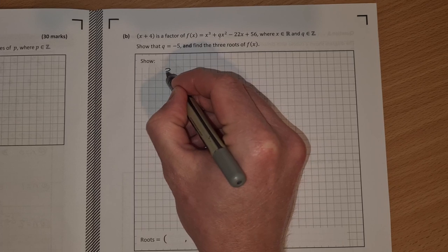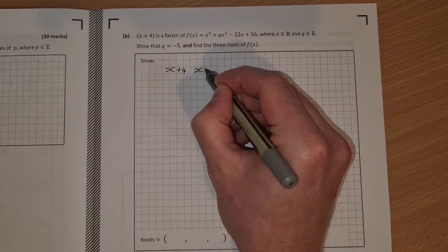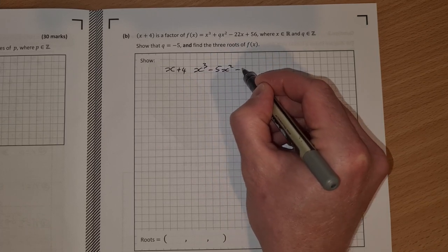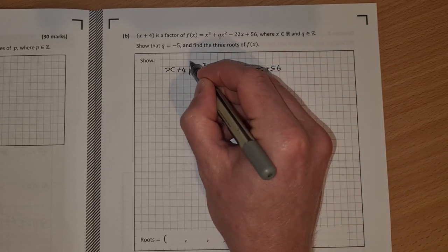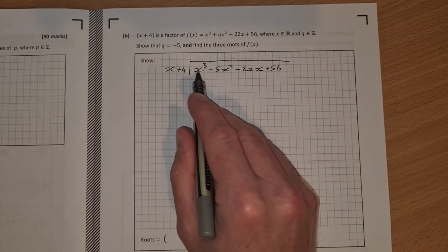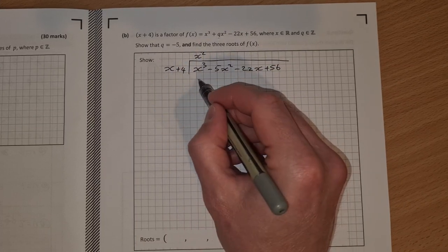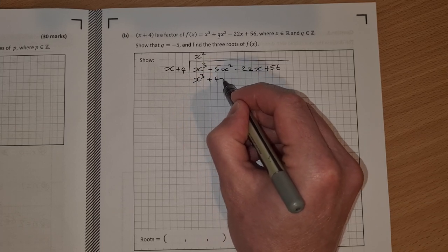So what I'm going to do is x plus 4 and I'm going to divide it into x cubed minus 5x squared minus 22x plus 56. So x into x cubed is x squared, multiply down, x by x is x cubed plus 4x squared.